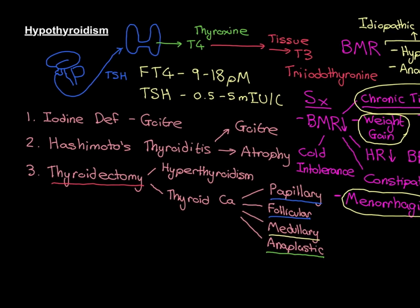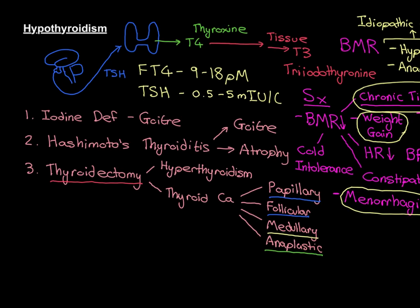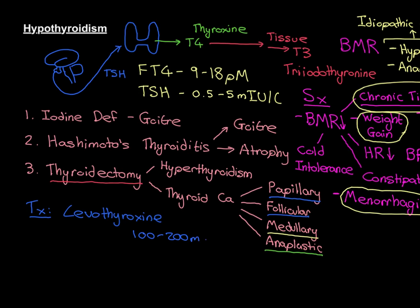Let us finally discuss treatment for hypothyroidism. This is extremely simple — you prescribe what the patient is missing. You give them thyroxine, specifically the drug levothyroxine. That is simply a certain optical isomer of thyroxine — don't be scared by the 'levo'; it's just thyroxine, telling you about the specific optical isomer being used. The typical dose for an adult is usually between 100 and 200 micrograms per day.